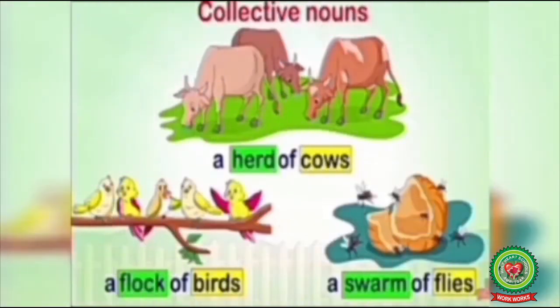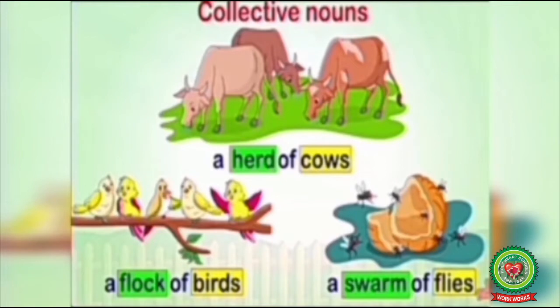Before starting, look at this picture. A herd of cows, a flock of birds, a swarm of flies. Here words like herd, flock, and swarm denote a group. So a herd of cows means a group of cows, a flock of birds means a group of birds, and a swarm of flies means a group of flies.